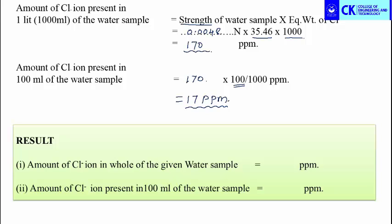The result: the amount of chloride ion present in one liter of the given water sample is 170 ppm, and the amount of chloride ion present in 100 ml is 17 ppm. From this, we can determine that it does not exceed the desirable limit of 250 mg per liter, so this water is desirable for drinking purpose. However, since it is a little high, some treatment is needed before drinking. By this way, we have calculated the amount of fluoride ion present in 100 ml of the given water sample using the argentometric method. Thank you so much.